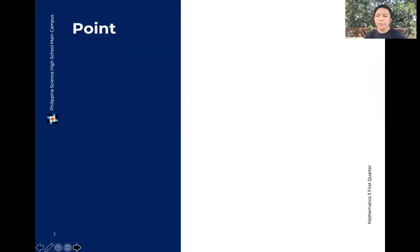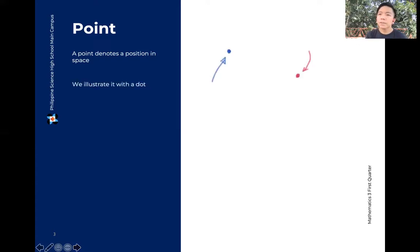Start with a point, yung basic. So a point, it is used to denote a position in yung space natin. So when you say space, pwede siyang three-dimensional space. Pwedeng yung Cartesian plane kung saan tayo basically nag-work. So we illustrate points with a dot like itong blue tsaka yung red na nandito. It is zero-dimensional.